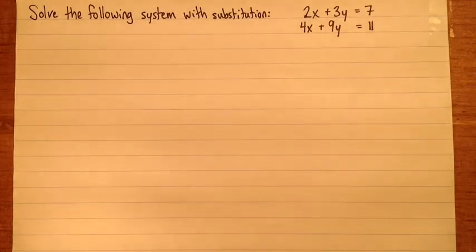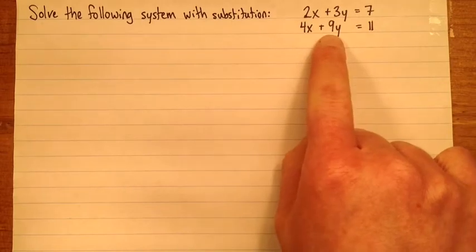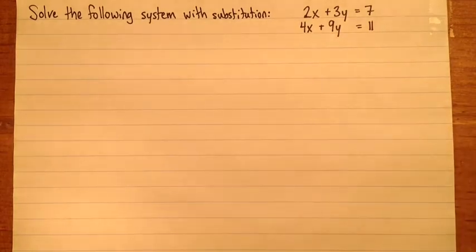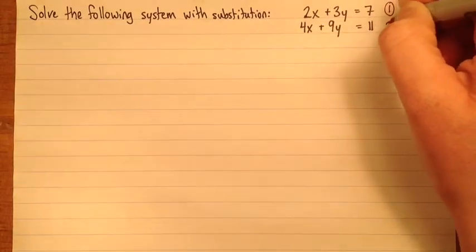So we want to isolate one of the variables in one of the equations, and then substitute it into the other. One thing we notice if we look at these equations, to figure out which variable to isolate, the first choice is if you've got one that has a coefficient of 1, and we don't here. We have 2x and 3y and 4x and 9y. So we don't have that little shortcut. That's fine, we can still isolate the equation, but it's good to look for that little shortcut, because it will save you time and effort if you do have it. So this will be equation 1, this will be equation 2.